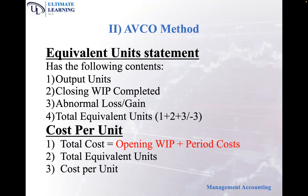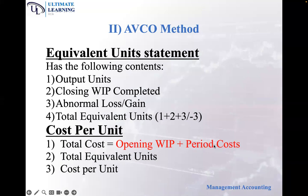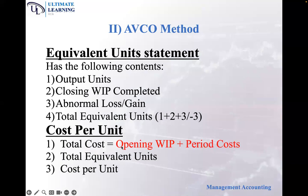Cost per unit under AVCO is calculated the same way as before, but for total cost you take the opening work in progress amount and add it to the period costs. The debit amounts are what we call period costs. So the key difference is: when there is opening work in progress, we add opening work in progress to the normal costs we were using, then divide by total equivalent units to get cost per unit.